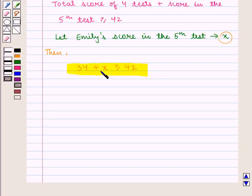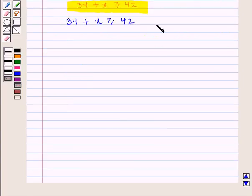Now we shall find the value of x. To find the value of x, we need to make x alone on one side of the inequality. So we subtract 34 from both sides of the inequality.